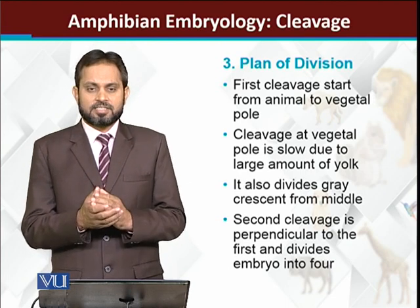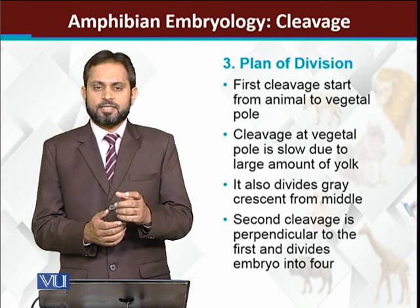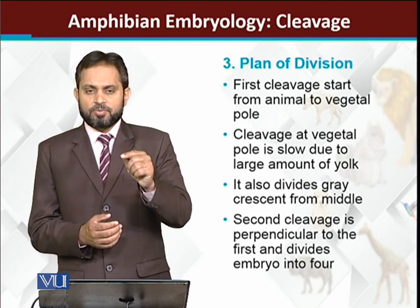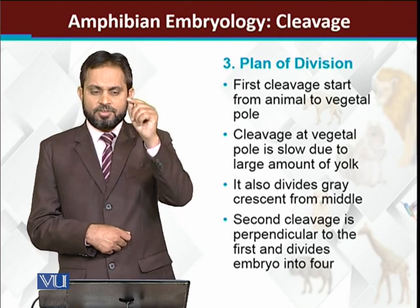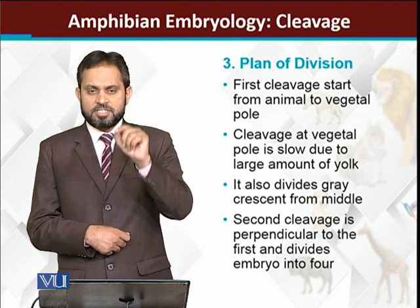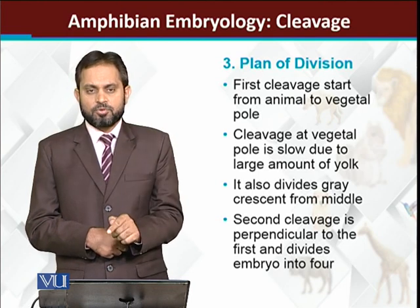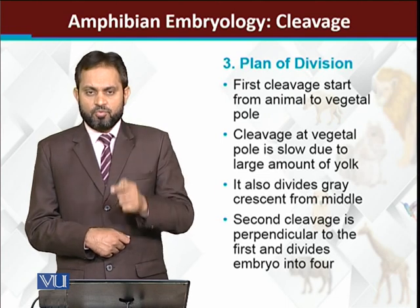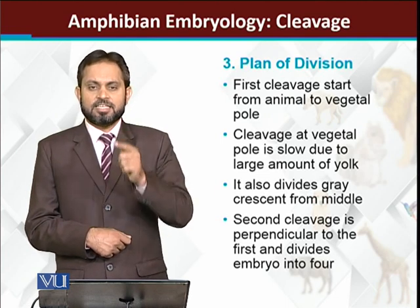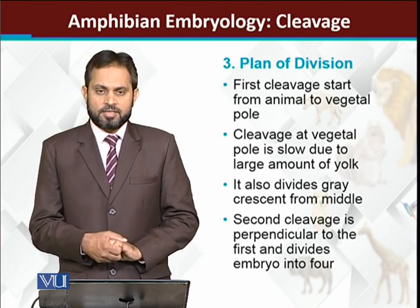Now we look at where the cleavage process starts. The first cleavage, or first cell division, starts from the animal pole and moves straight downward toward the vegetal pole. The first cleavage is vertical — it begins at the top (animal pole) and moves toward the vegetal pole.